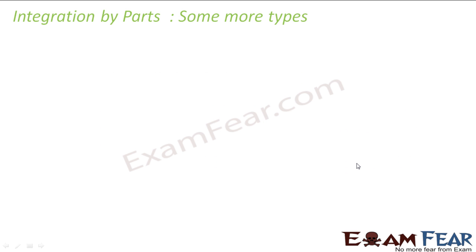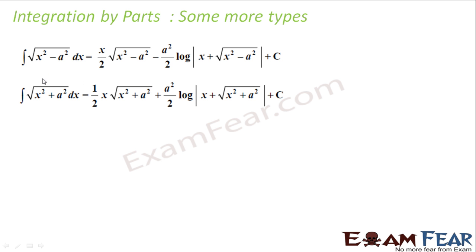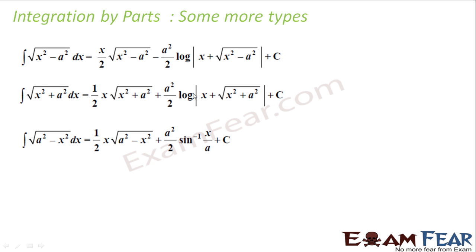Now let's take some integration by parts types. First, if you have ∫√(x²−a²) dx, that is nothing but (x/2)√(x²−a²) − (a²/2)·log(x + √(x²−a²)). Similarly, ∫√(x²+a²) dx is (x/2)√(x²+a²) + (a²/2)·log(x + √(x²+a²)). And ∫√(a²−x²) dx — note it is a²−x², not x²−a² — is (x/2)√(a²−x²) + (a²/2)·sin⁻¹(x/a).